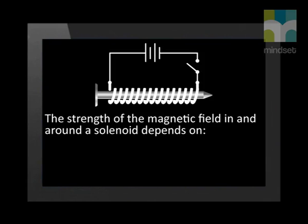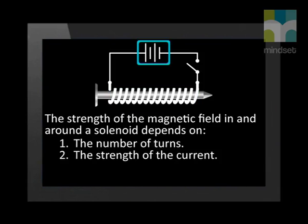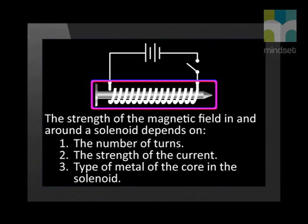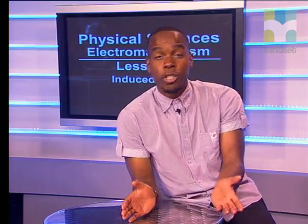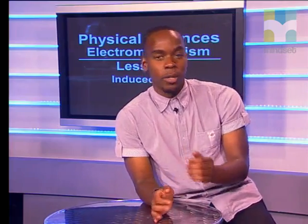The strength of the magnetic field in and around a solenoid depends on the number of turns, the strength of the current, and the type of metal of the core in the solenoid. We looked at electricity that produced magnetic fields, and then investigated the reverse of this, where magnetic fields produced electricity.